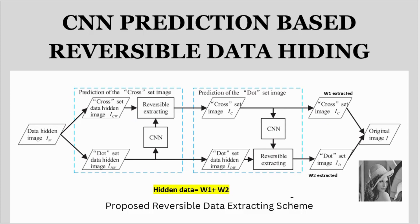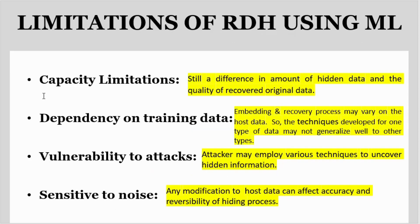Reversible data hiding using machine learning, like other techniques, has its limitations. There is still a difference in the amount of hidden data and quality of recovered original data. The embedding and recovery process may vary depending on the host data, so a technique developed for one type of data may not generalize well to other types. Vulnerability to attack is also a concern — attackers may employ various techniques to uncover hidden information, potentially distorting the image. The technique is also sensitive to noise, as any modification to host data can affect the accuracy and reversibility of the hiding process.